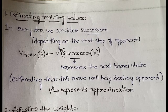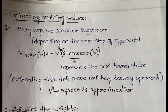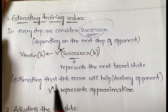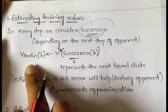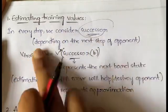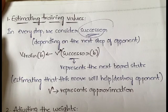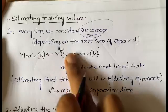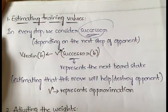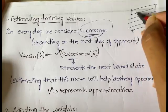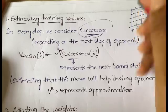There are two steps in choosing an approximation for the target function. In the first step — estimating training values — at each step of estimation we consider the successor, which is the next state. v_train(b) is assigned the value of v_hat(successor(b)), meaning we estimate what the next board state will be based on what the opponent will do next — whether their move will help us or destroy us.